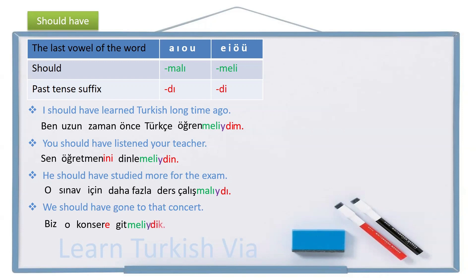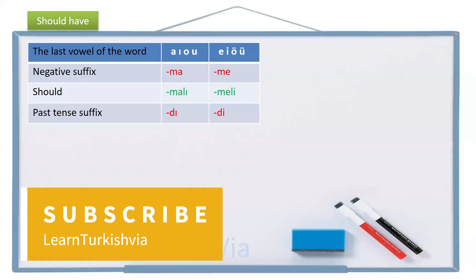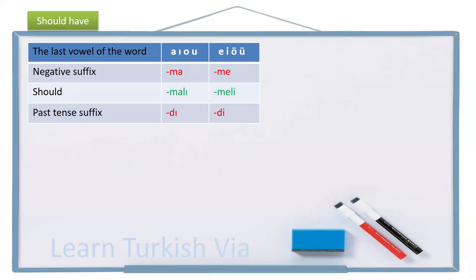We should have gone, gitmeliydik. We should have gone to that concert. Biz, o konsere, gitmeliydik. Alright, so, this is how we use should have in positive sentences. Now, let's see how we use it in negative sentences. This time, after the verb, first we are going to use negative suffix, then should, then past tense suffix. Let's see how.